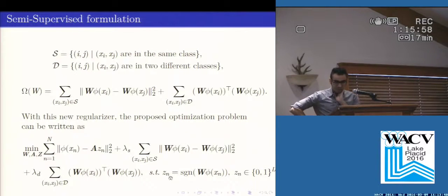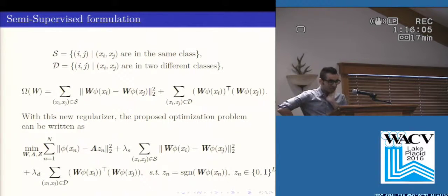In this framework, we have some auxiliary information in two sets, where the first set has some data points that are similar, and the second set has some data points that are dissimilar.